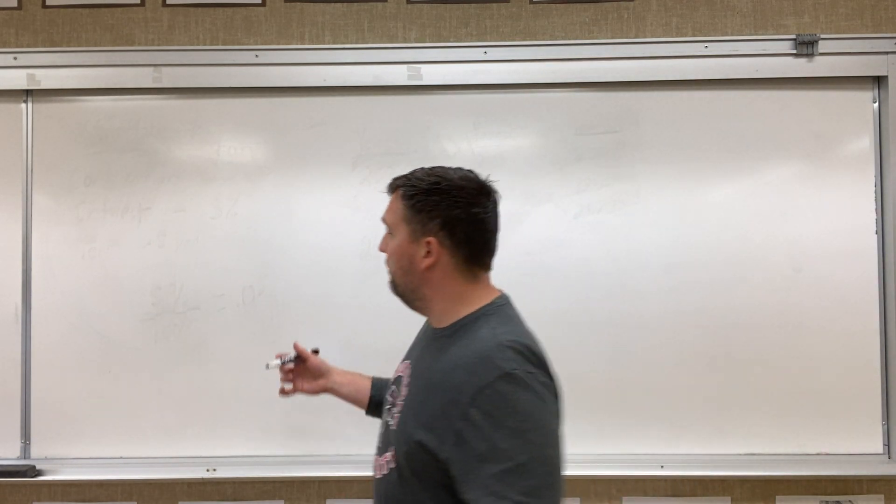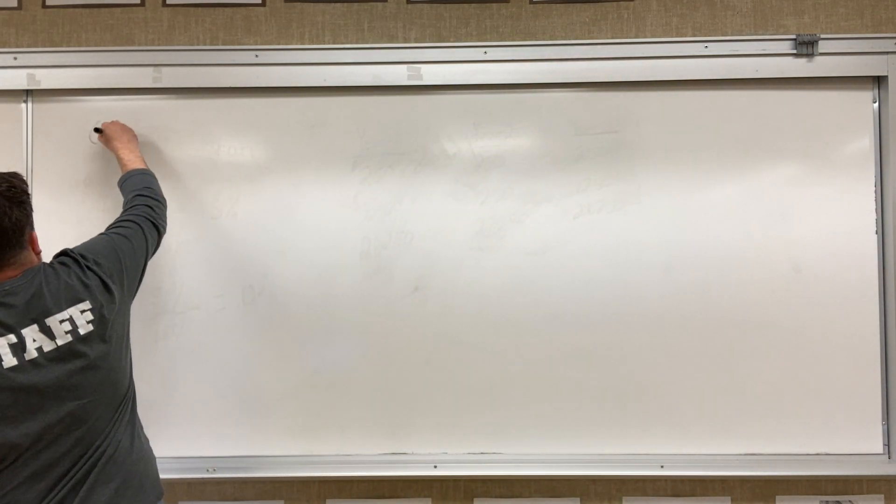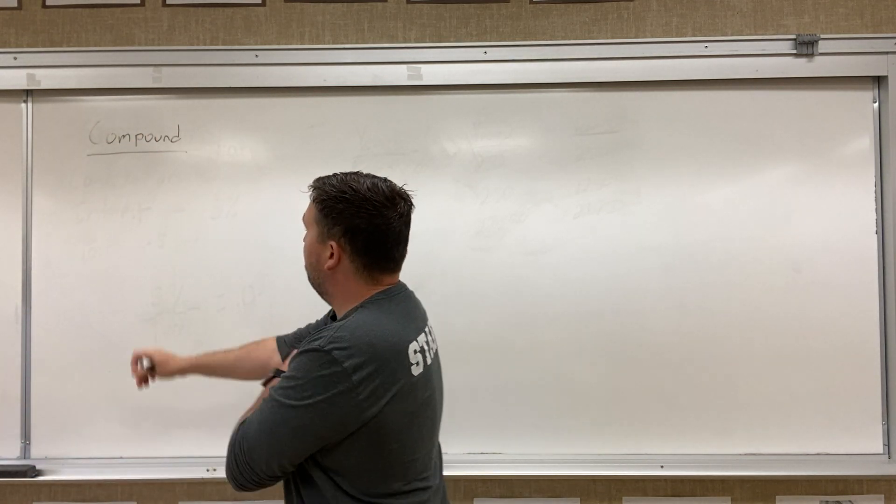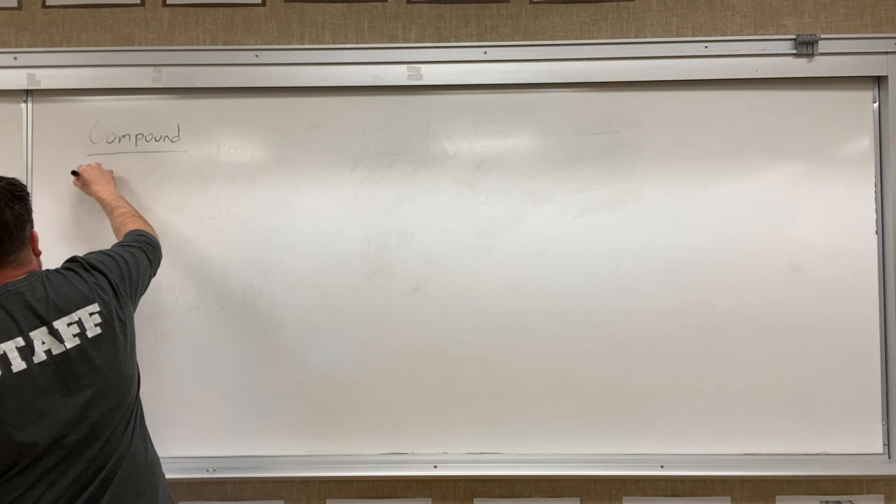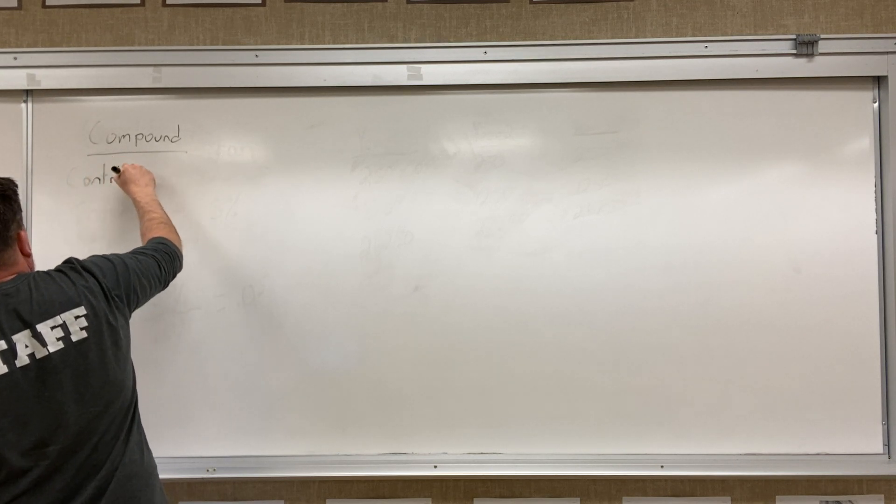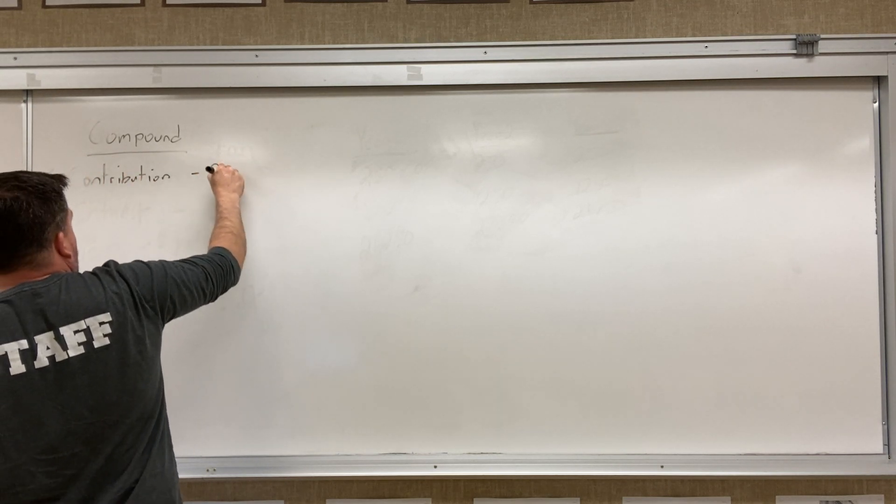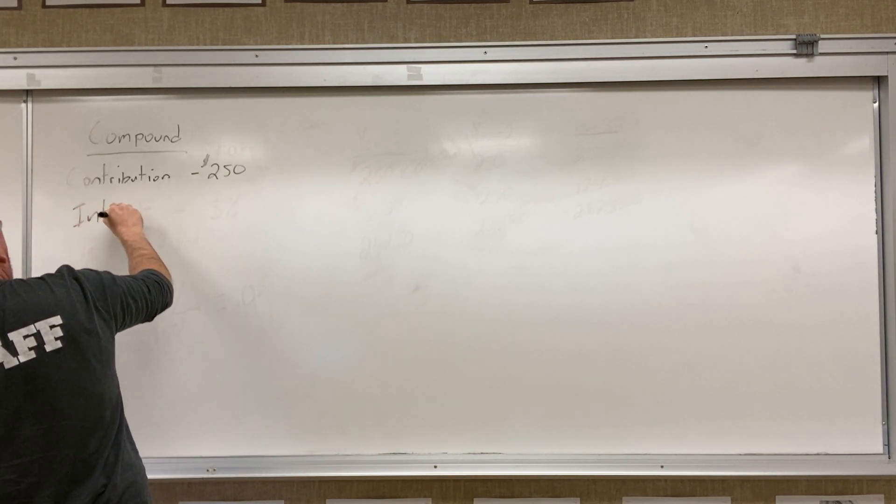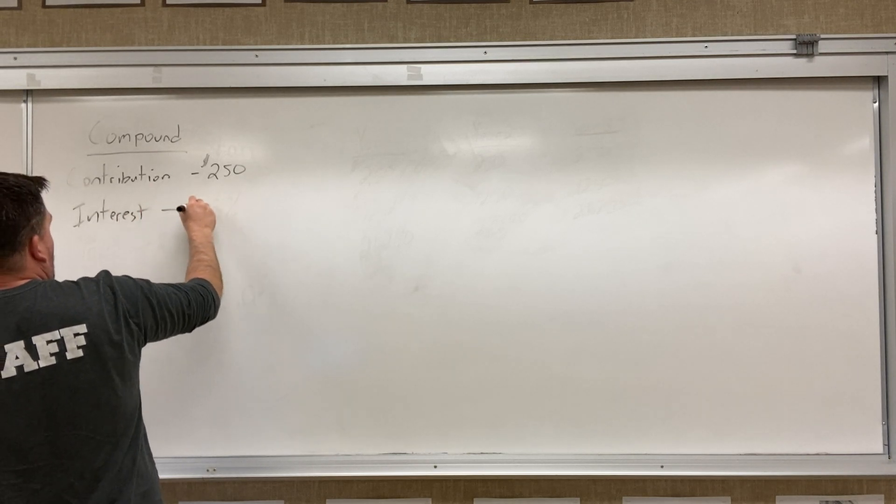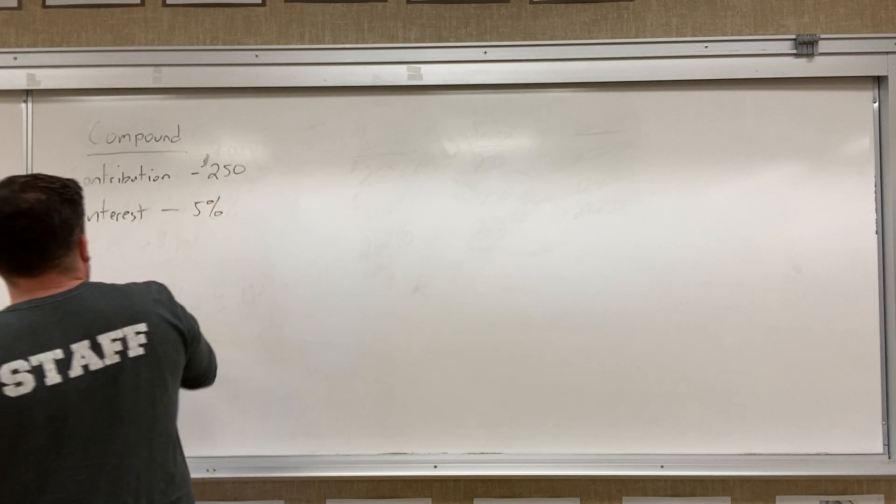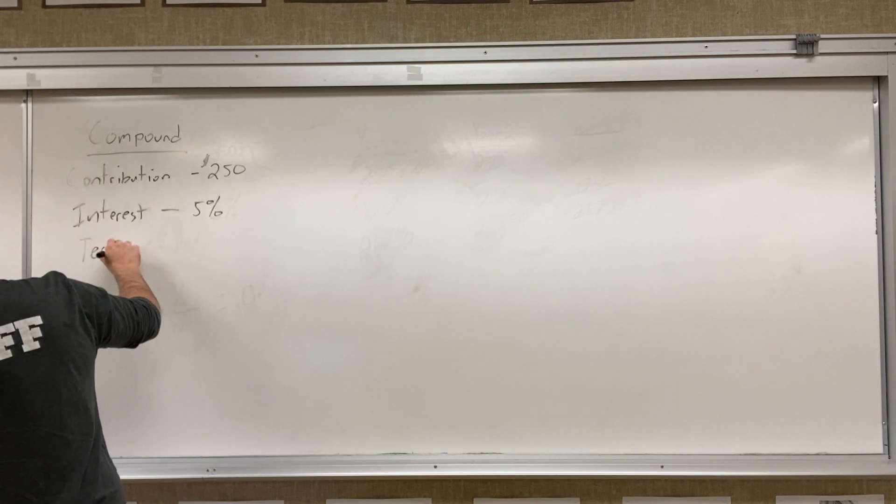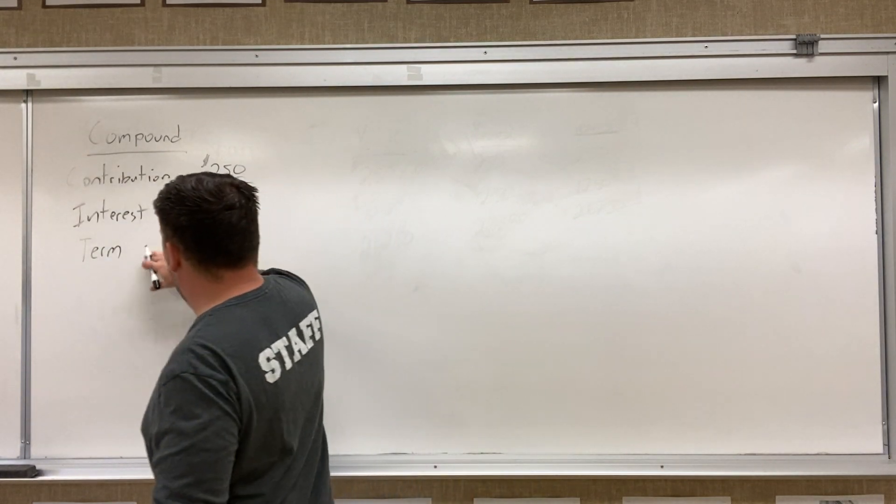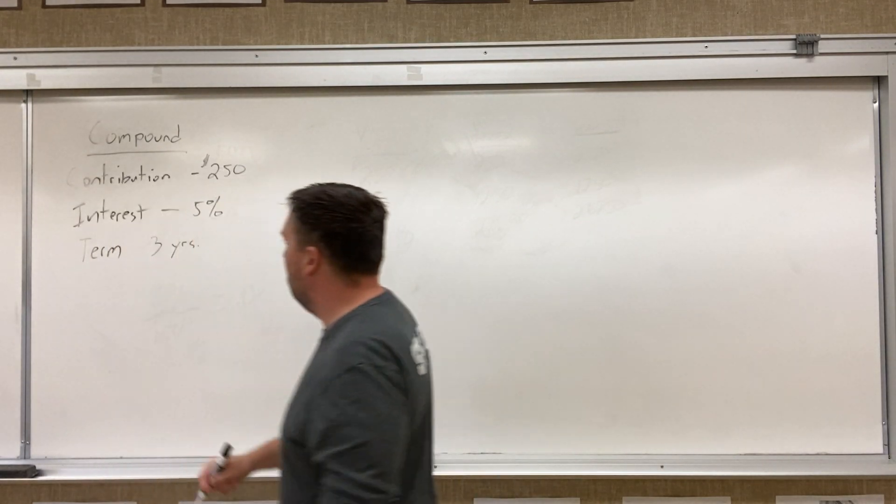Okay, so same information. So compound interest works where we're doing the same amount. We're still making a contribution of $250. Okay, we are still having the same interest rate as before of 5%, and our term is still going to be, we're going to do it for five years. I know I only did it for three before, so maybe even wanted to save for three years for right now. Okay.